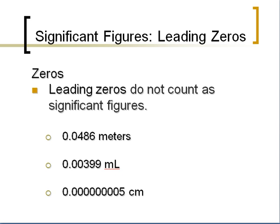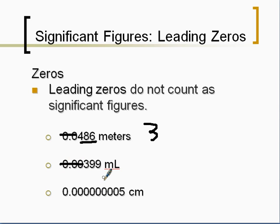It gets a little bit trickier when you start talking about zeros. The first type is leading zeros — zeros that are in front of a number, usually associated with very small numbers. For example, 0.0486: the first two zeros are called leading zeros, they're only there as placeholders, and we do not count them as significant figures — so this number has only three sig figs. Similarly, a number whose first three digits are leading zeros still has just three sig figs for the non-zero part. And a number with all leading zeros and only one remaining digit has just one significant figure.